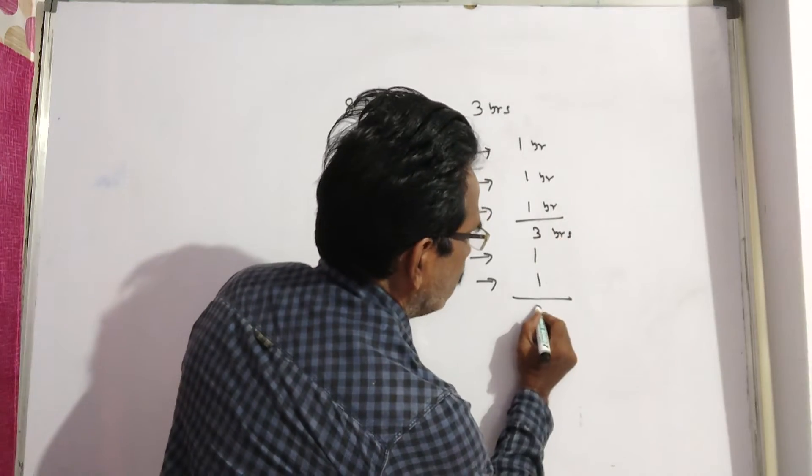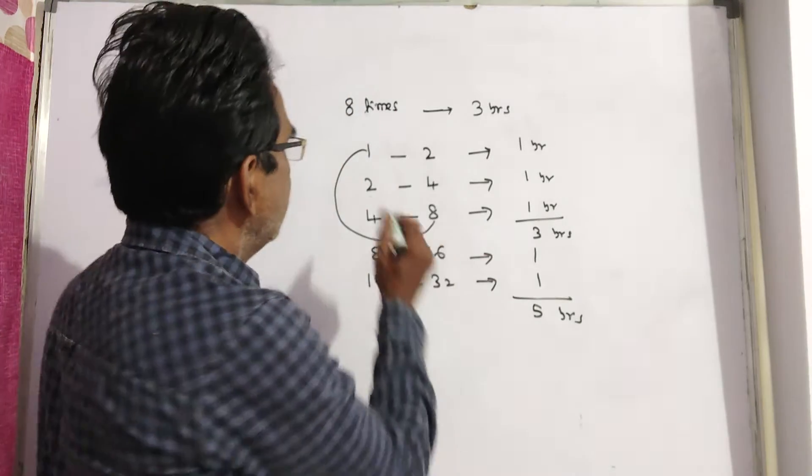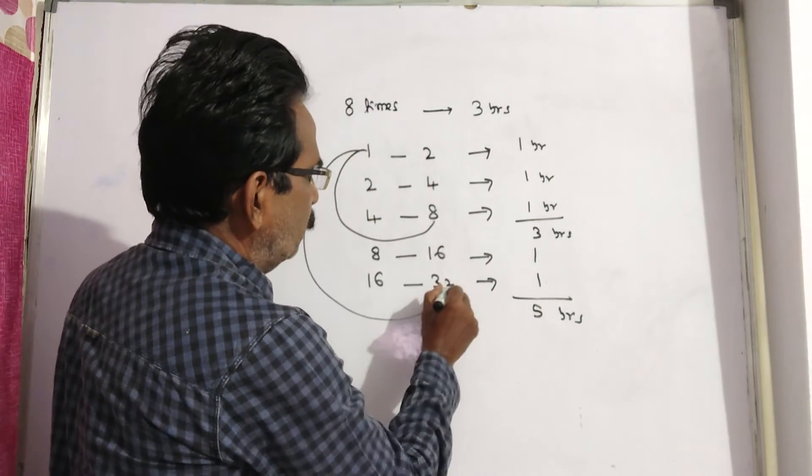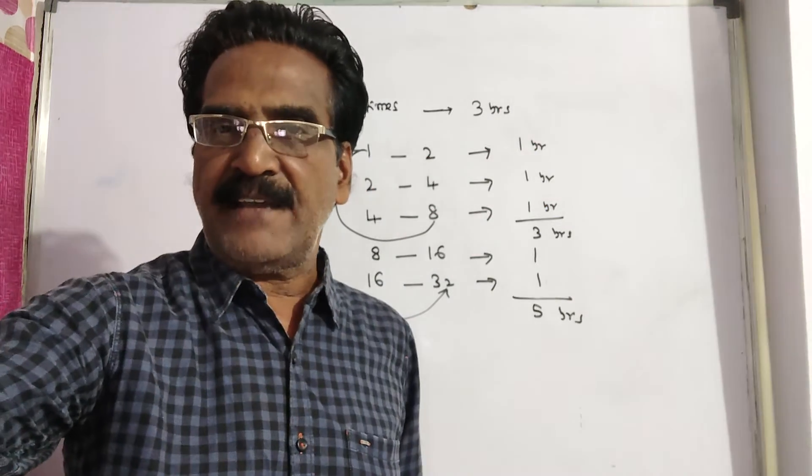That means in a total period of 5 years, it becomes 32 times itself. Okay friends, thank you. Your answer is 5 years.